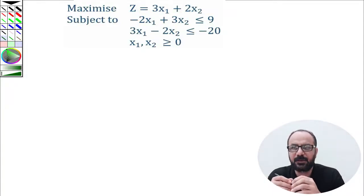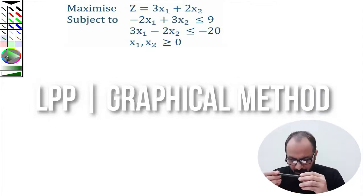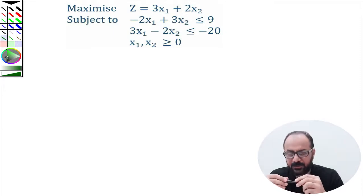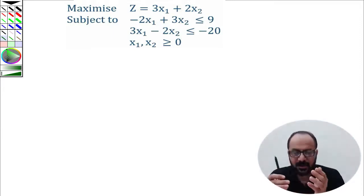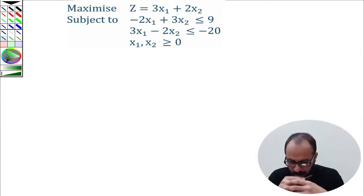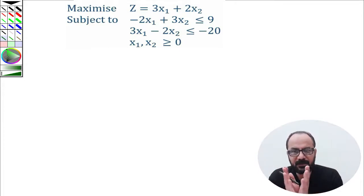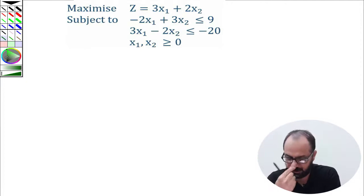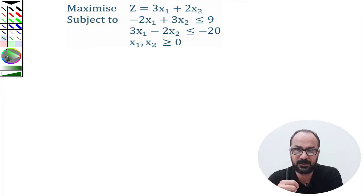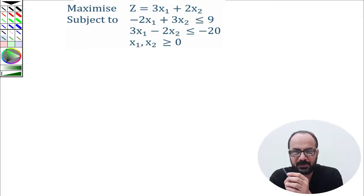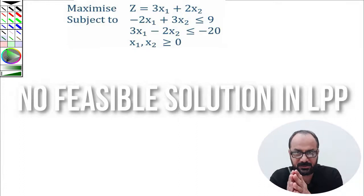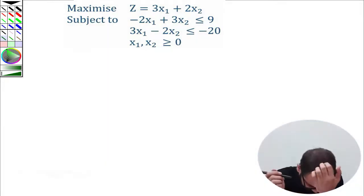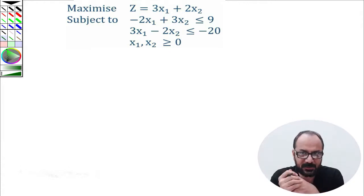Hello and welcome to this solution of a linear problem using the graphical method. Today's problem is a special case. We had talked in the last video that there are certain special cases when solving a linear problem using the graphical method. One case we discussed last time was the unbounded solution — a solution that extends to no limits, with infinite boundaries. Another special case we will discuss in this video.